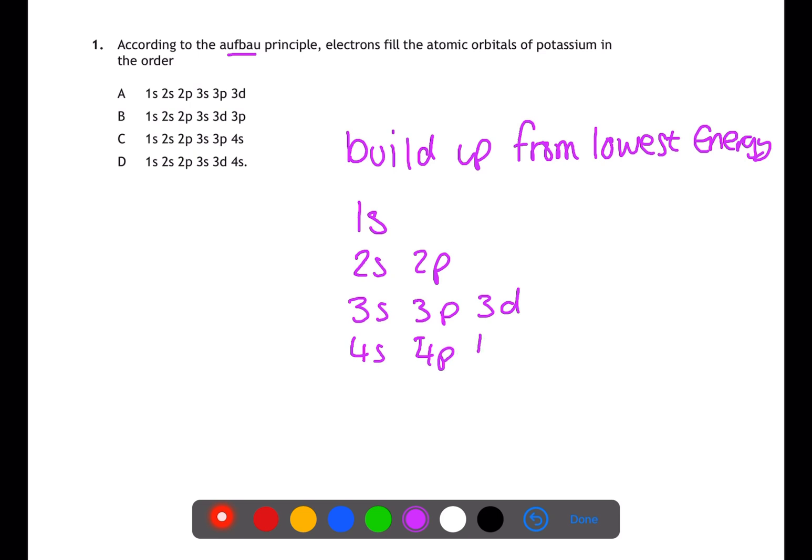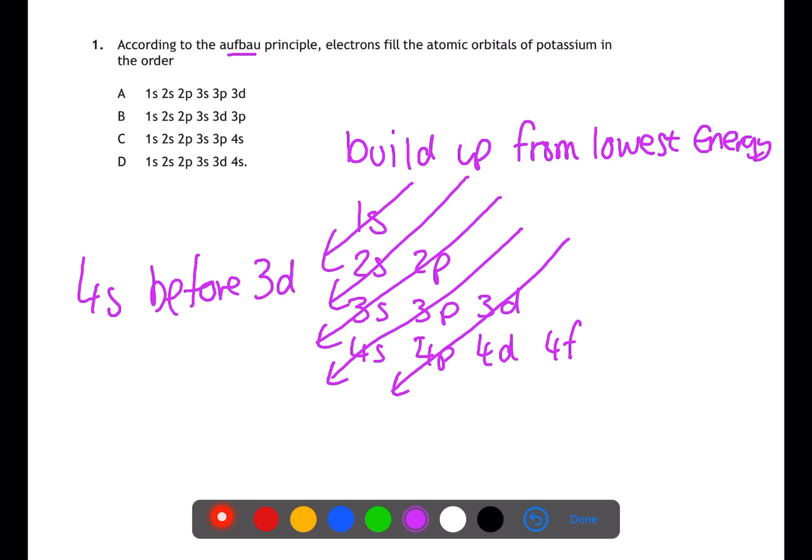However, they do not fill in this order. If we take diagonal lines from the top right we have 1s, 2s, 2p, 3s, 3p, 4s, 3d, 4p, and so on. This means that the 4s will fill before the 3d. This means that for potassium it will fill in order C.